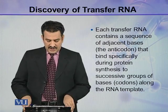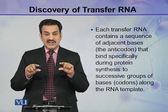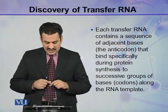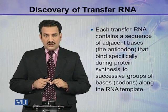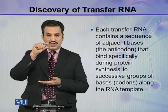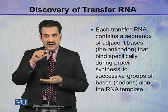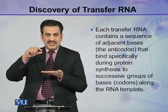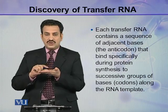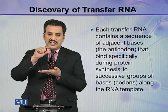Each transfer RNA contains a sequence of adjacent bases called the anticodon that binds specifically during protein synthesis to successive groups of bases called codons on the RNA template. This specific sequence on the tRNA is called anticodon, and similarly there is a specific sequence of bases on the template RNA called codon. The anticodon and codon can identify each other and base pair.